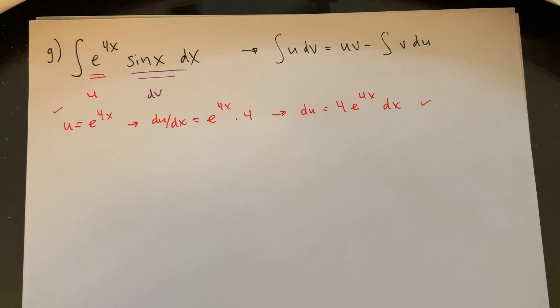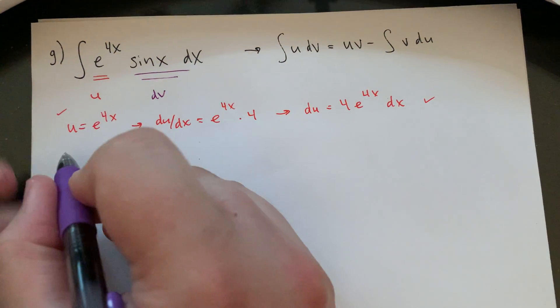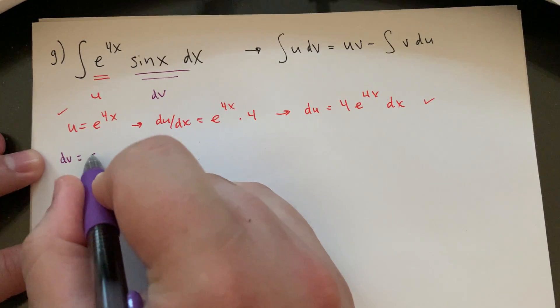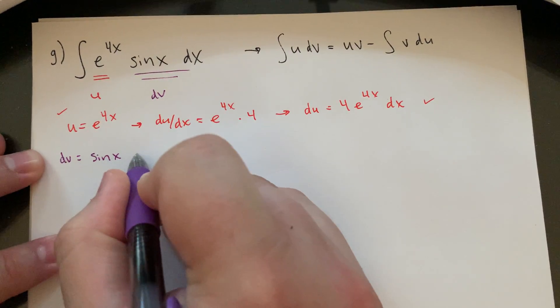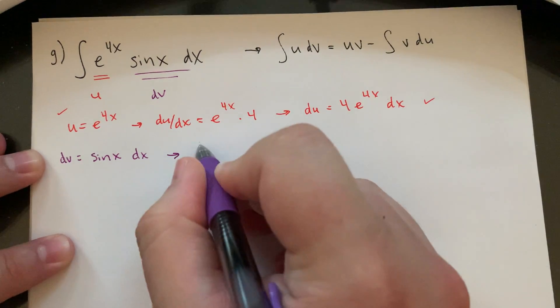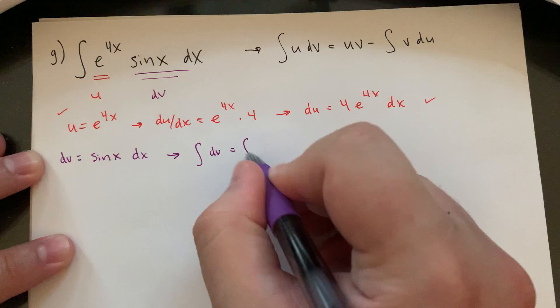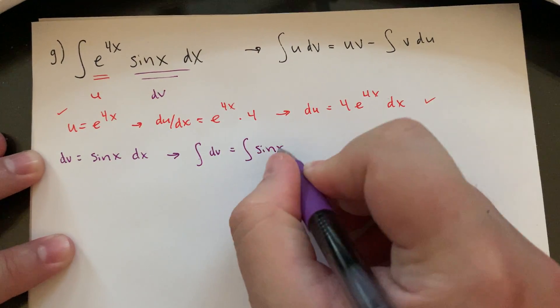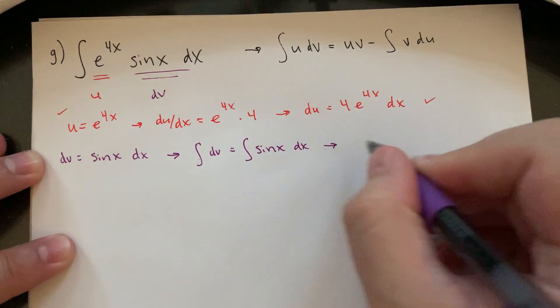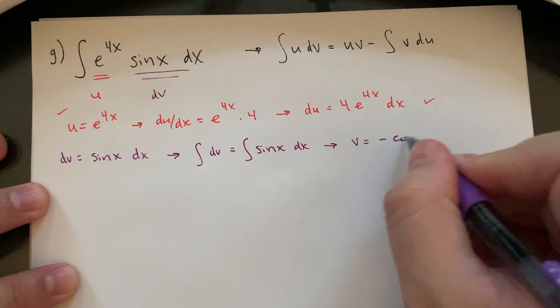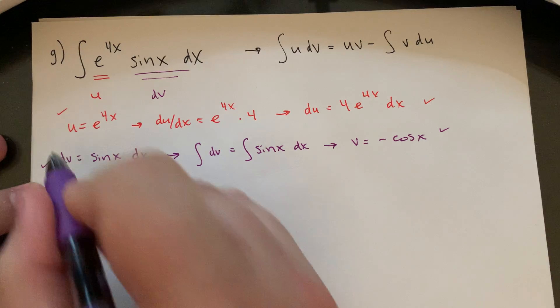All right, half of what I need. My dv, this is maybe the nicest version of dv we've had of these examples, just a nice sine of x. So my anti-derivative there would be negative cosine. Negative cosine of x.